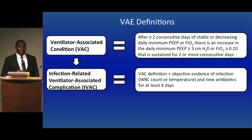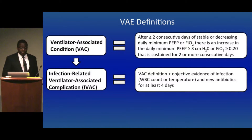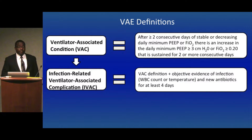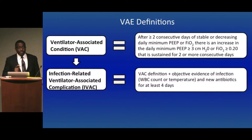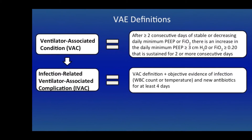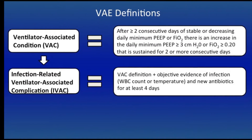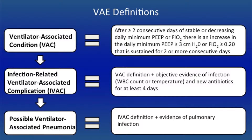The second tier is called an infection-related ventilator-associated complication, or IVAC. This is a subset of VACs with objective evidence of infection based on an abnormal white blood cell count or abnormal temperature, and new antibiotics started and continued for at least four days within the VAE window. The third tier is called possible ventilator-associated pneumonia, which is a subset of IVACs with definitive evidence of a pulmonary infection.